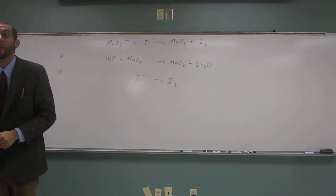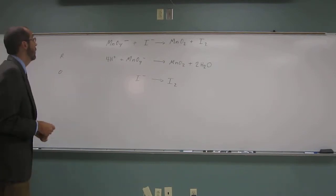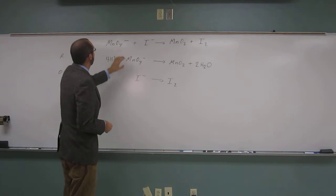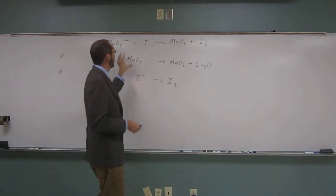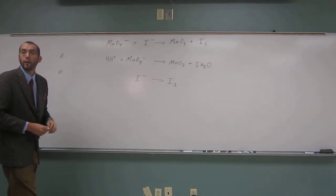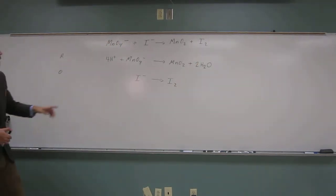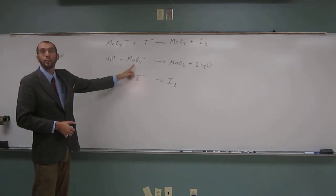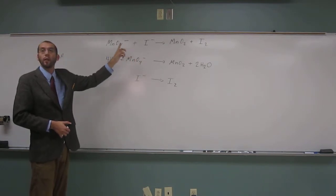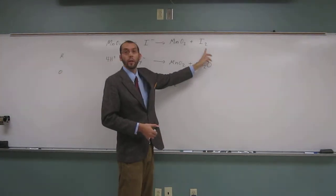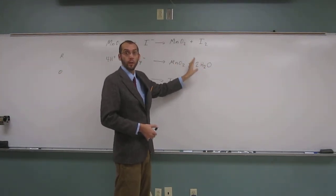But the next thing we need to do is balance the charge. Remember, count up the charges. Is there the same amount of charge on this side as this side? So how many pluses do we have here? Four. And a minus, right? So what's the overall charge here? Plus three. What's the overall charge over here? Zero.